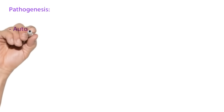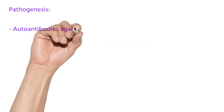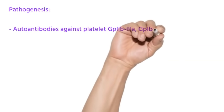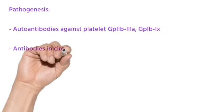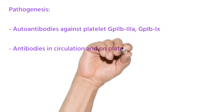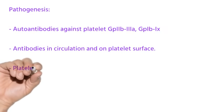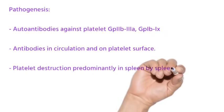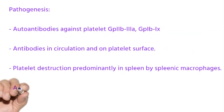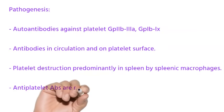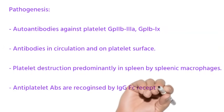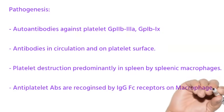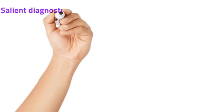The pathogenesis includes formation of autoantibodies against various platelet glycoproteins. The antibodies are seen in plasma or circulation and also on the platelet surface. Platelet destruction is predominantly seen in splenic macrophages. The anti-platelet antibodies are recognized by IgG Fc receptors of splenic macrophages and subsequently platelets get killed.